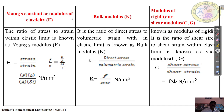Young's modulus or modulus of elasticity: these constants are always stress by strain within elastic limit. The ratio of stress to strain within elastic limit is known as Young's modulus. E is equal to stress by strain, which equals F by E. Stress is equal to load by cross sectional area, and strain is equal to change in length by original length. Simplifying, we get E equal to P into L divided by A into delta L, in Newton per mm square.